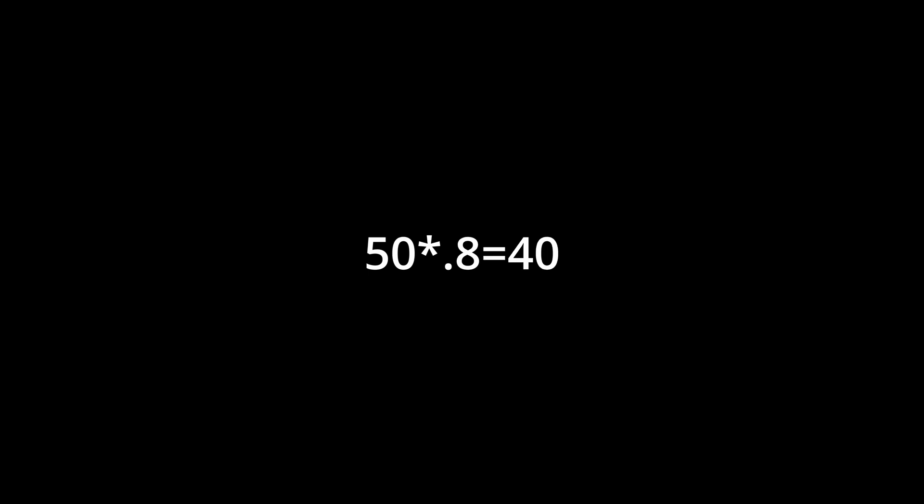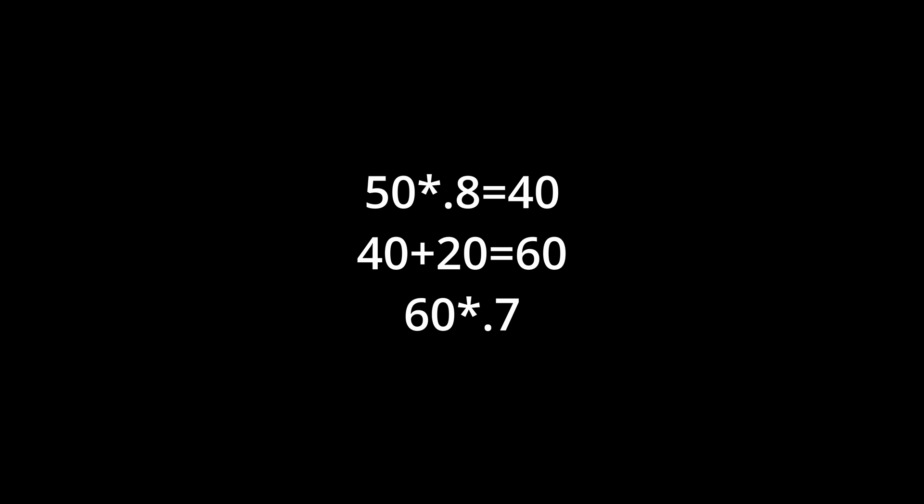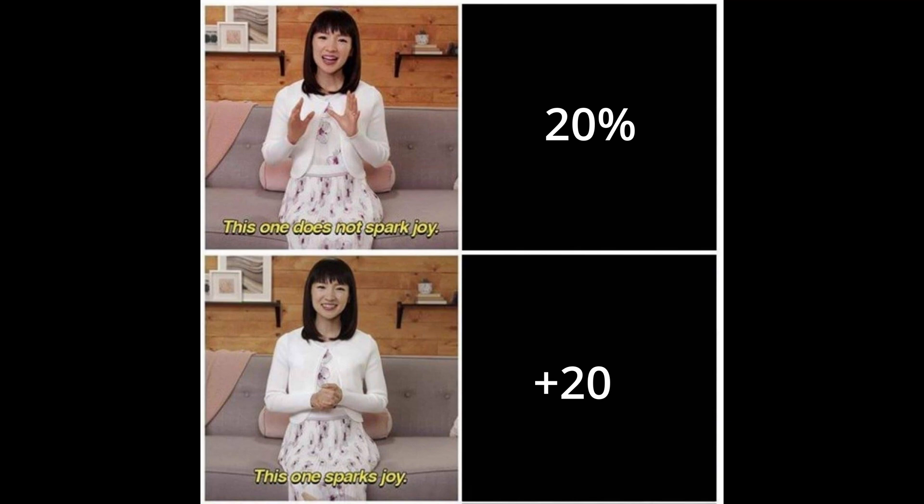The input gate would say: add 20 to the number, so now you'd have 60. And the output gate would then tell you to use 70% of this number in your actual value, which would be 42, while keeping this value updated for the future. This allows the LSTM to forget what is unimportant and remember what is important.